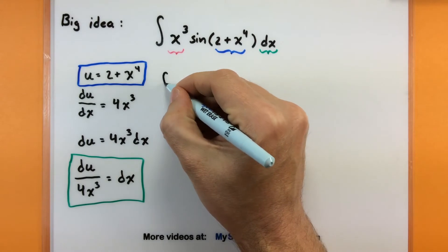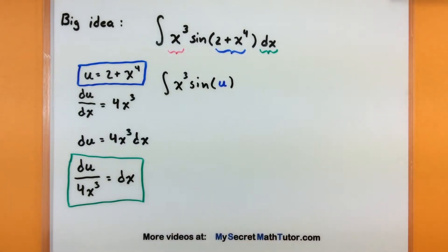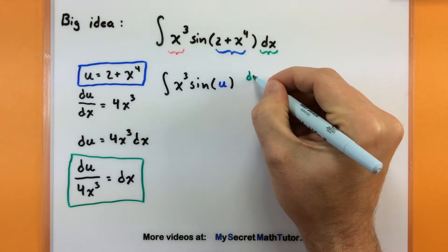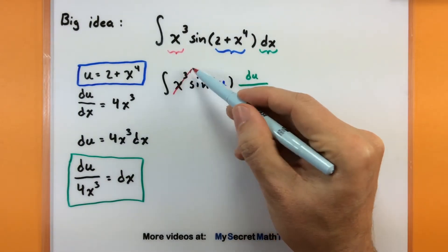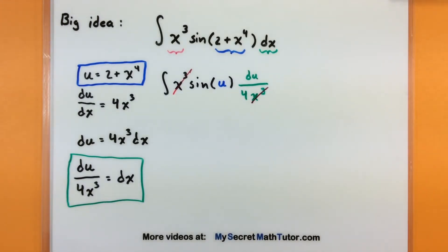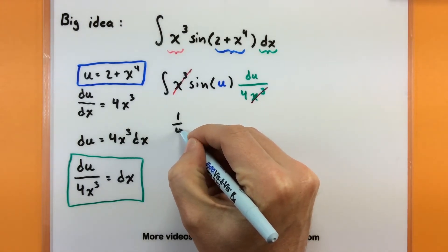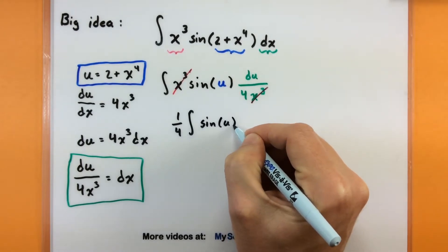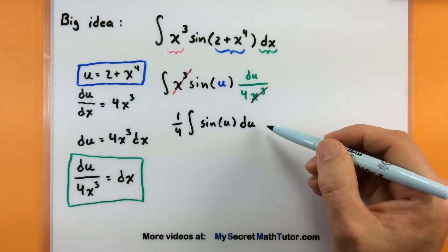Let's carefully put in the pieces. This turns into the integral of x cubed, then the sine — here's where we swap it out — we call that u. As we get to the dx, we replace it with du all divided by 4x cubed. It's not simpler yet, but it's getting there. I see an x cubed on top and an x cubed on the bottom — those cancel out. That 4 is a constant, so we move it out front as one-fourth. We're left with one-fourth times the integral of sine of u du.